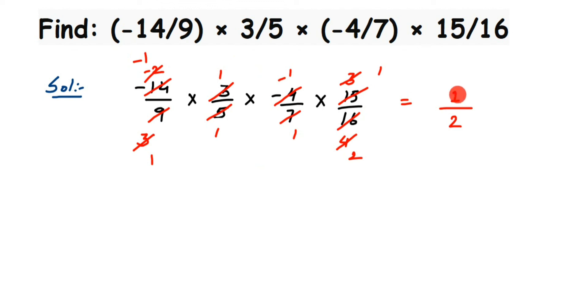That's how you solve this question — instead of multiplying numerators and denominators first and then canceling, cancel before multiplying. I hope this is clear. If you have any questions or doubts, drop a comment below. Thank you so much for watching.